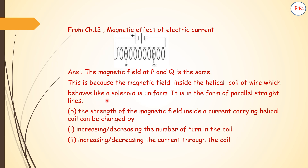For part B, the strength of the magnetic field depends on the current flowing through it and the number of turns. So the strength of a magnetic field inside a current-carrying helical coil can be changed by increasing or decreasing the number of turns in the coil, or by increasing or decreasing the current through the coil. Part A carries one mark and part B carries one mark.